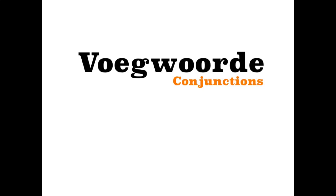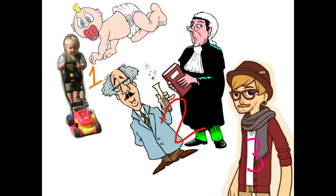Hi everyone! Today we're going to be looking at voegwoorde, or conjunctions. There are three groepe, or three groups of conjunctions, and each one affects the sentences in a very particular way. We'll look at all of these personalities as we go through each group.